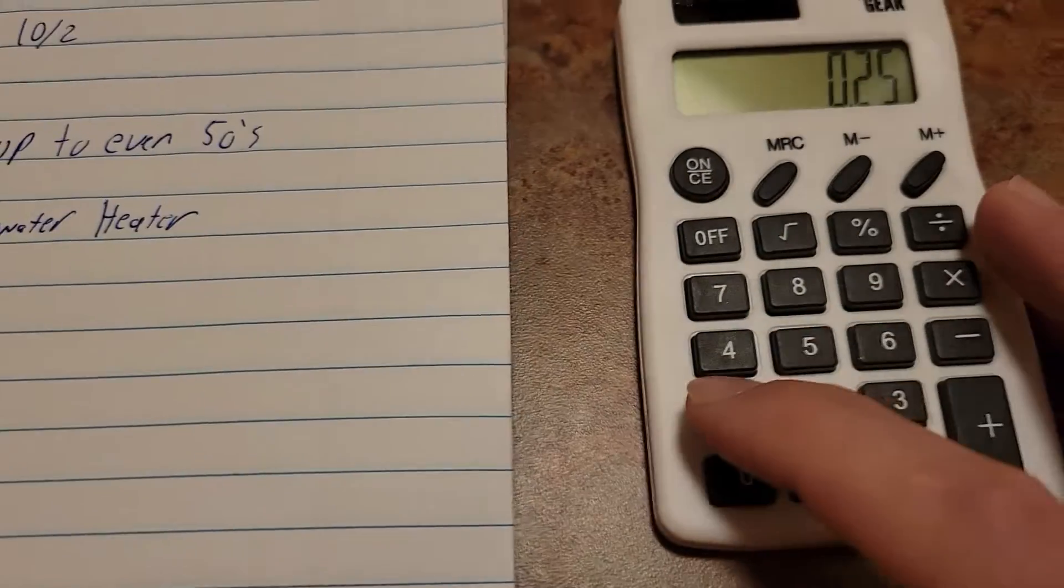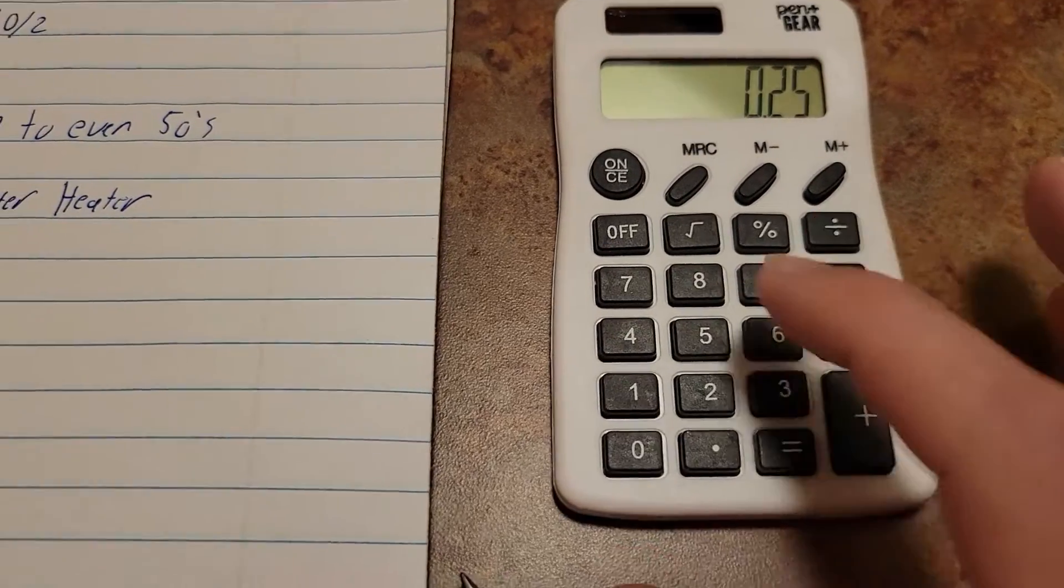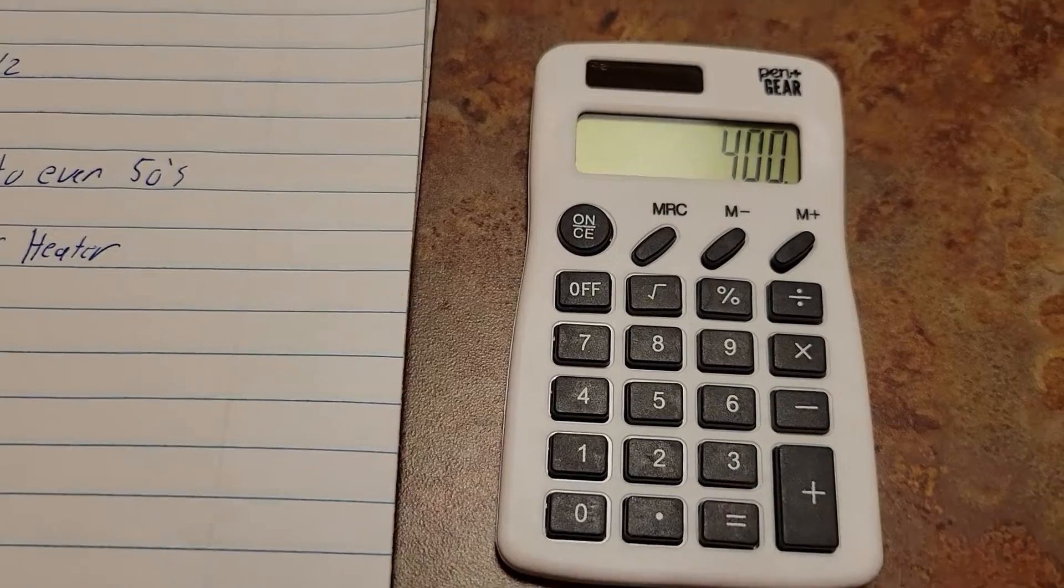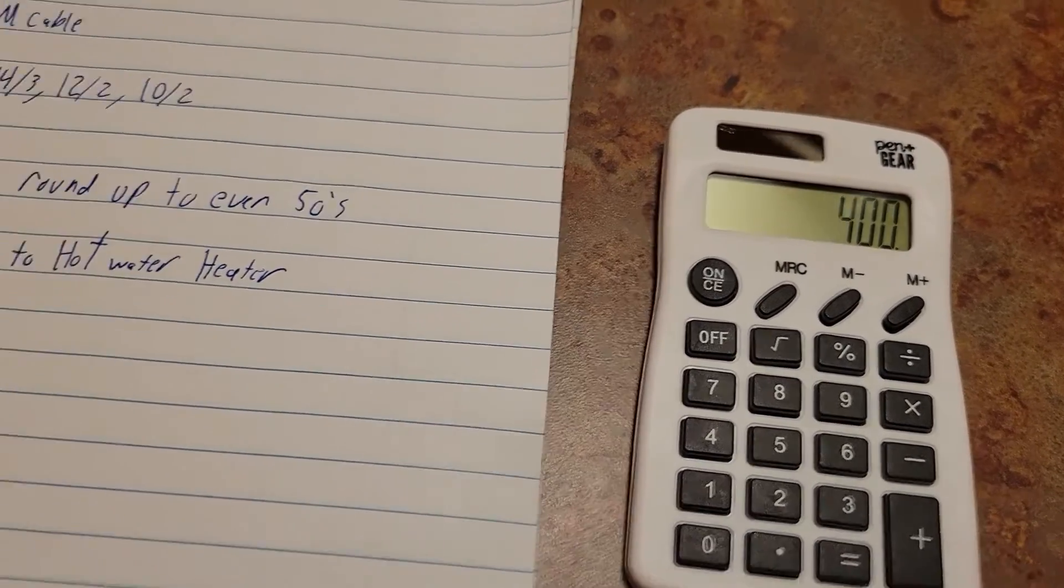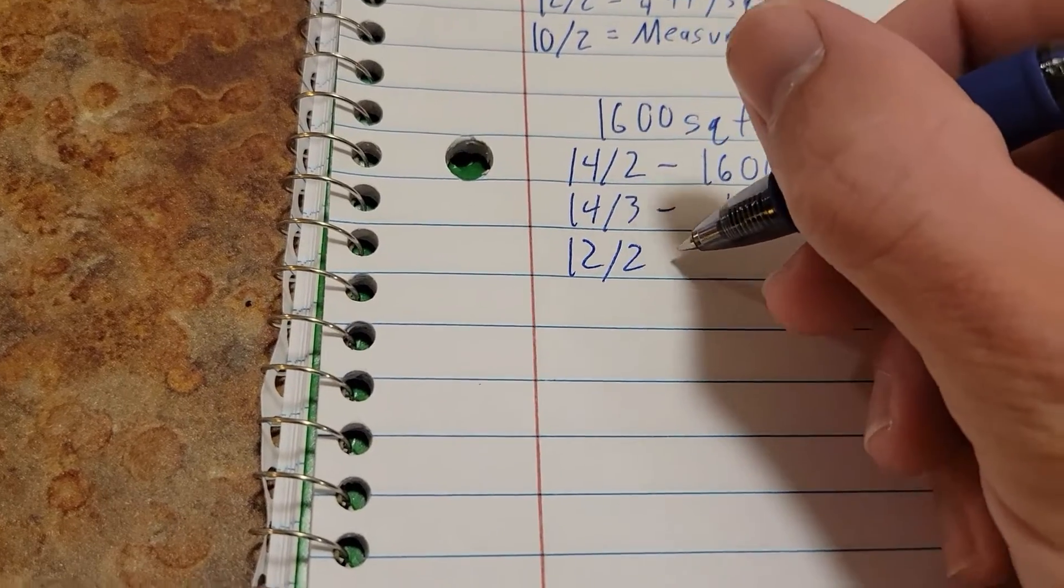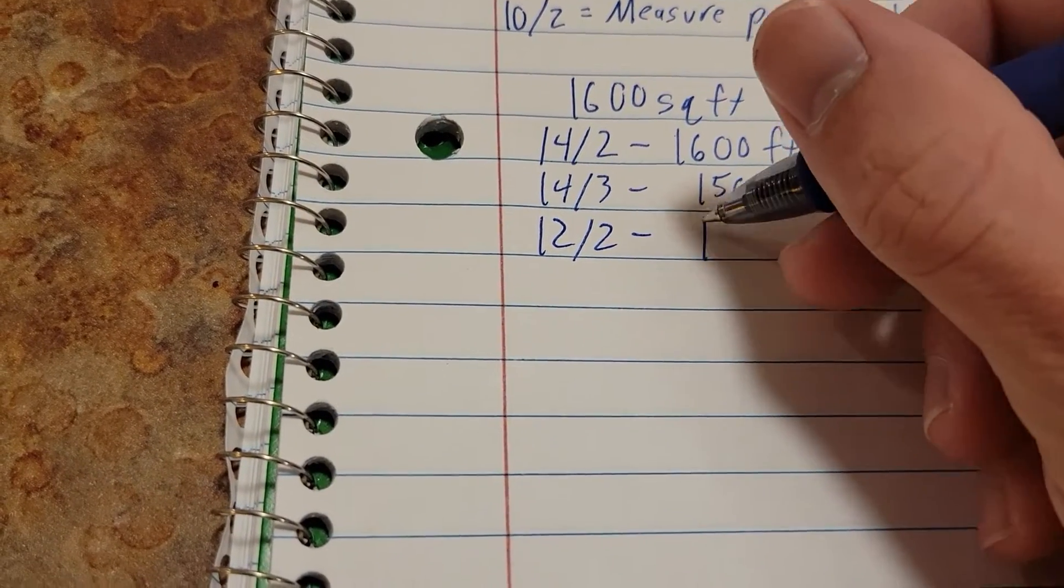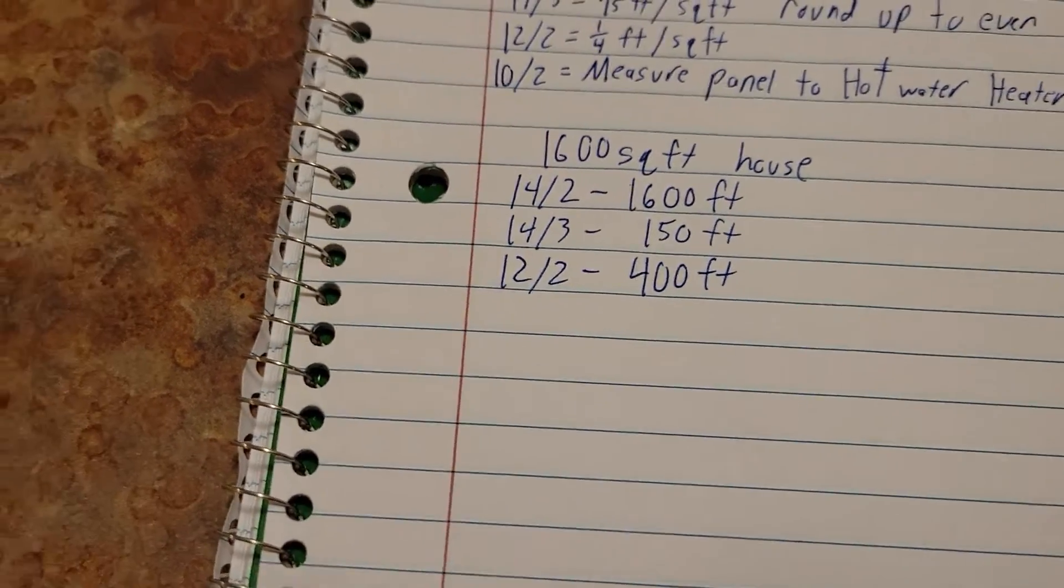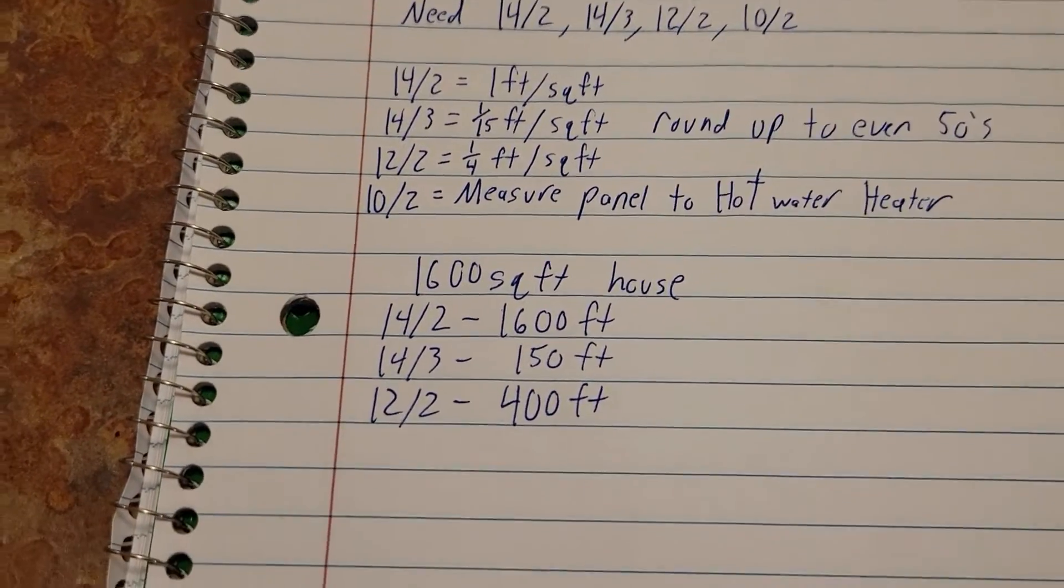And that's going to leave us with 400 feet. So our 12/2 we're going to need 400 feet. Now you can go online and you can start getting prices.